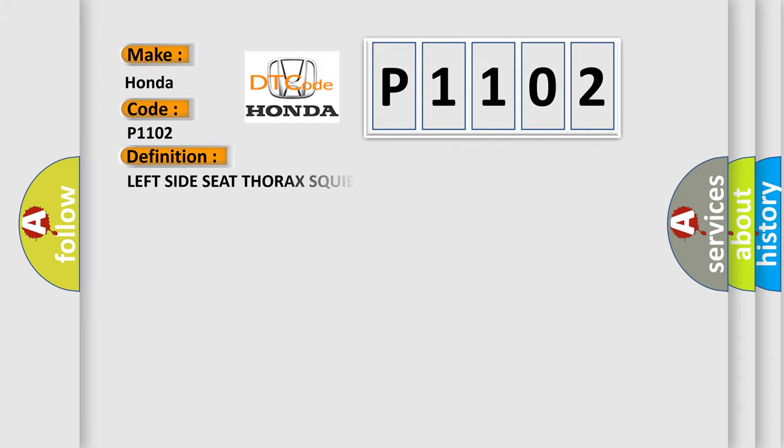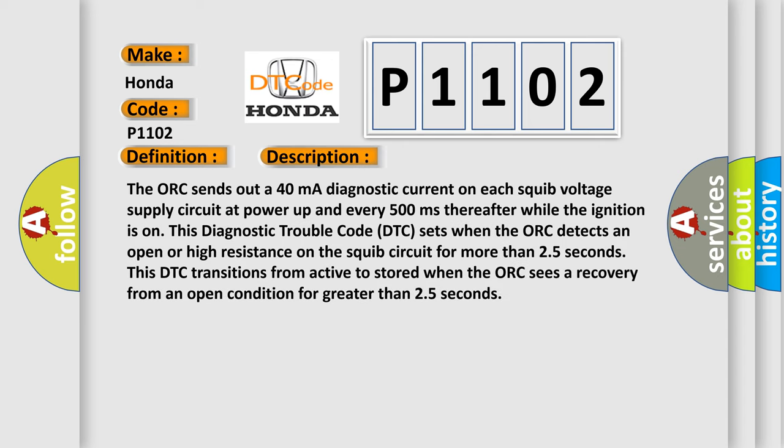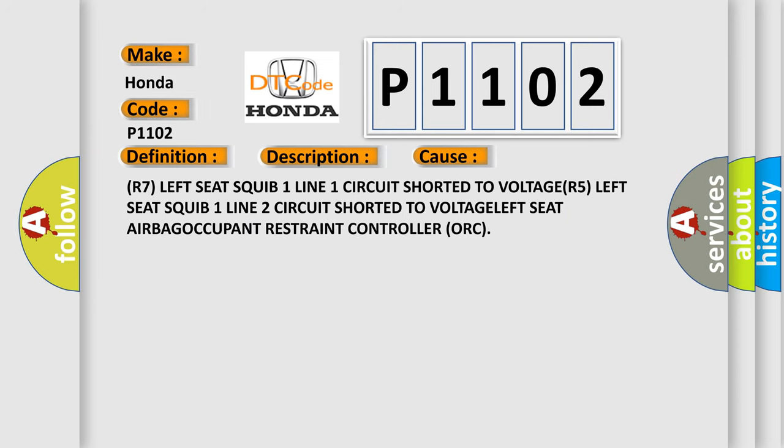The basic definition is: Left side seat thorax squib one high. The AUK sends out a 40 mA diagnostic current on each squib voltage supply circuit at power up and every 500 ms thereafter while the ignition is on. This DTC sets when the AUK detects an open or high resistance on the squib circuit for more than 25 seconds. This DTC transitions from active to stored when the AUK sees a recovery from an open condition for greater than 25 seconds. This diagnostic error occurs most often in these cases: left seat squib one line one circuit shorted to voltage, left seat squib one line two circuit shorted to voltage, or a fault in the left seat airbag occupant restraint controller (ORC).